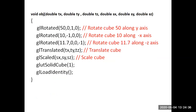In the OBJ function, the arguments passed are: TX (translation X parameter), TY (translation Y parameter), TZ (translation Z parameter), and the scaling parameters SX, SY, SZ.